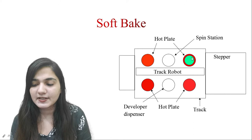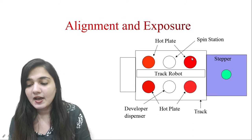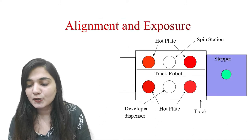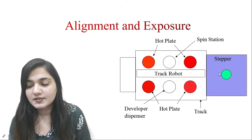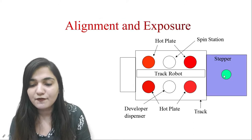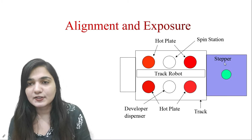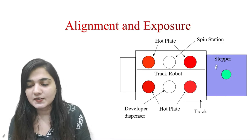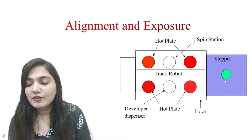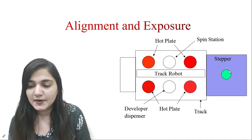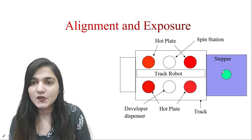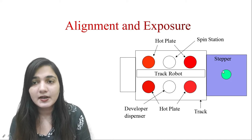After the soft baking process, the track robot will be sending the wafer to the stepper for the alignment and exposure purposes. Now the wafer is in the stepper and the alignment and exposure process has happened.